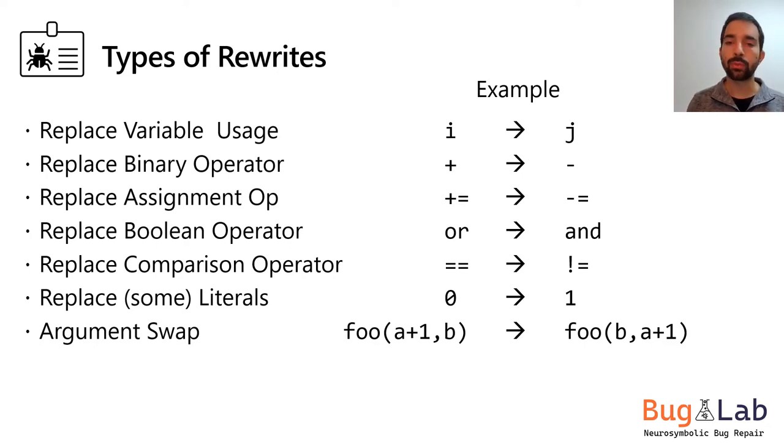According to research in software engineering, these bugs are quite common and consist of around 10% of the small bug fixes. These rewrites may appear simple on the surface, but humans have a hard time detecting them in the vast amounts of code.